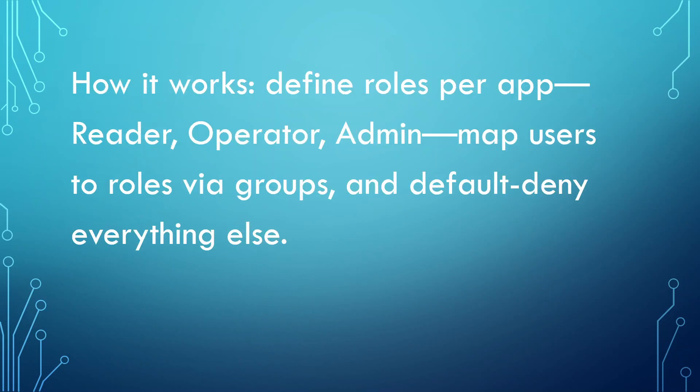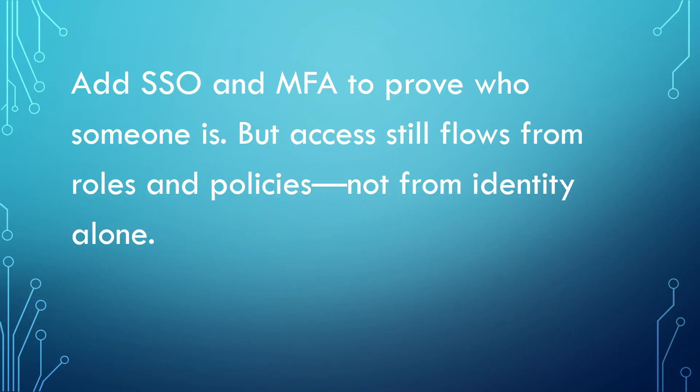How it works? Define roles per app — reader, operator, admin — map users to roles via groups, and default deny everything else. Add SSO and MFA to prove who someone is, but access still flows from roles and policies, not from identity alone.